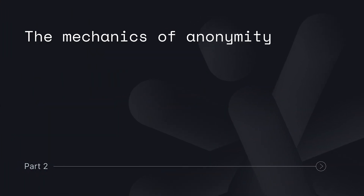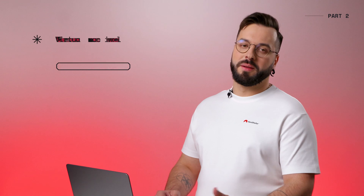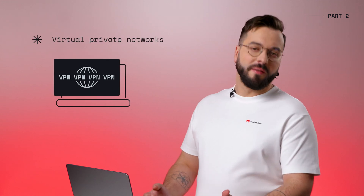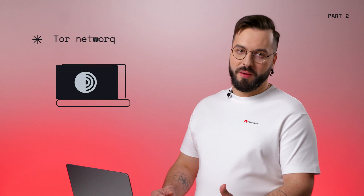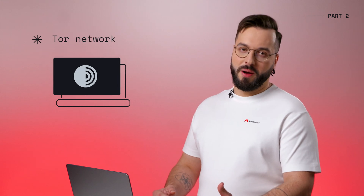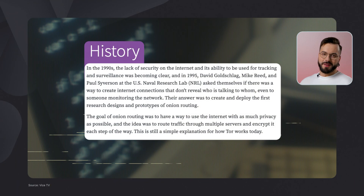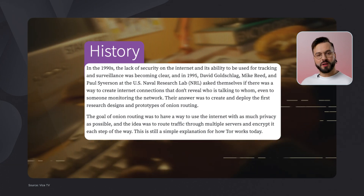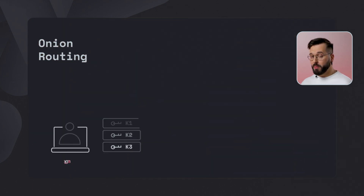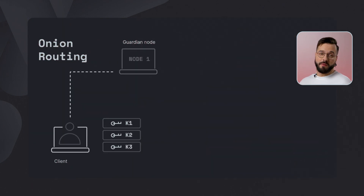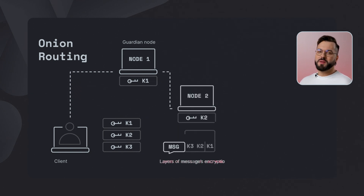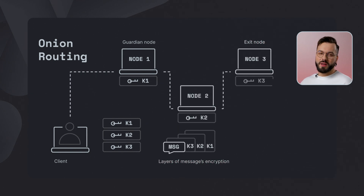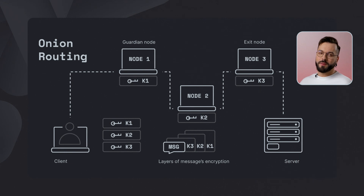Let's talk about the mechanics of anonymity. The dark web is built on it. Threat actors use three key tools to hide their identities: virtual machines, virtual private networks, and the Tor browser — short for The Onion Router. Developed in the 90s to protect US intelligence communications, Tor encrypts your internet traffic through multiple volunteer-operated servers called nodes. Each node knows only the next step, making tracing the user's original location nearly impossible.